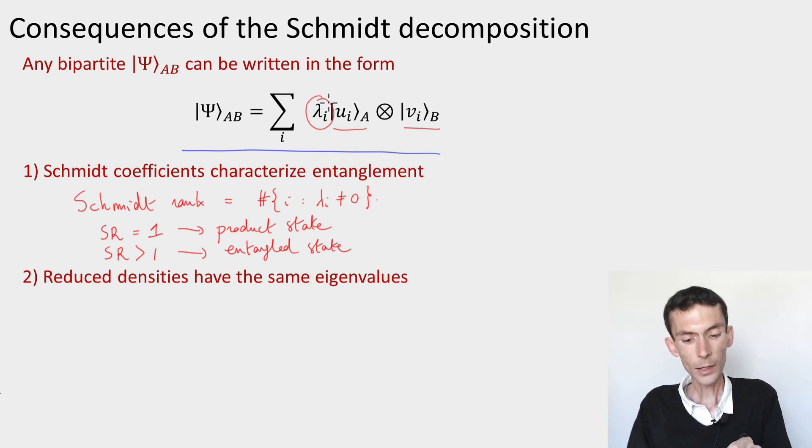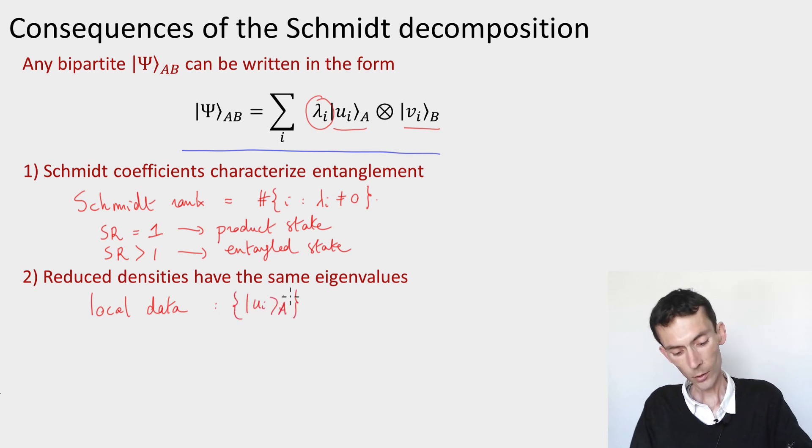And so we have in a way some local data, which are the Schmidt bases, these vectors ui and the vectors vi. These are called local data because you can change them by acting only locally. If I apply a unitary on the system A, this is going to map the ui basis to another basis, but it's not going to affect the Schmidt coefficients.